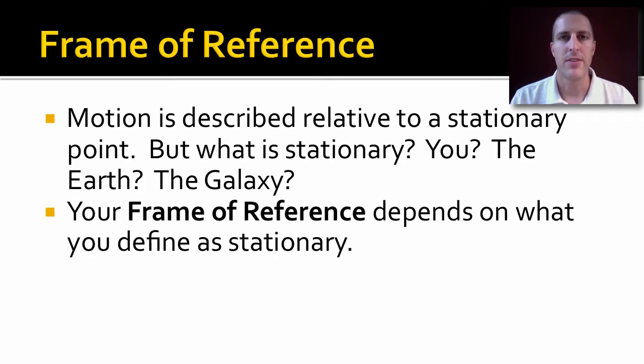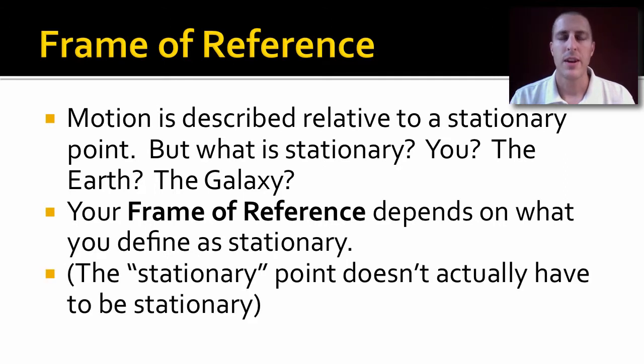Now, typically we define the surface of the Earth as stationary, because for most of our problems that's the important thing, is how fast is something moving with respect to the surface of the Earth? Or where is it with respect to the surface of the Earth? Now, this is good. Even though the Earth's moving, we can define even a moving object as our stationary point. So, for this class, we say the surface of the Earth is our stationary object.